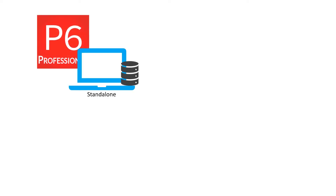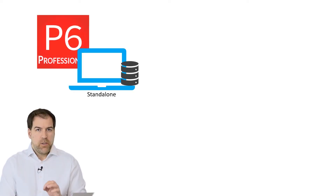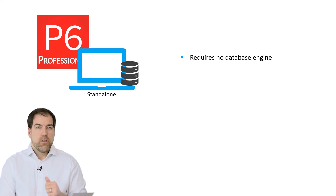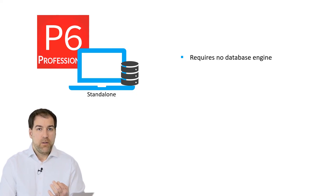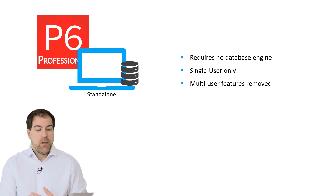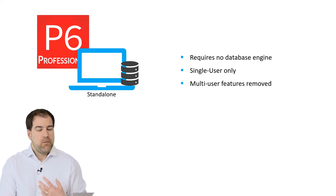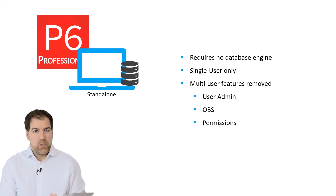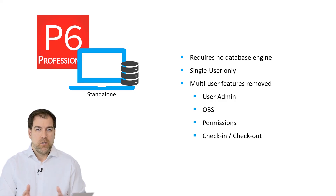Lastly, let's talk about the P6 Pro Standalone version. There are one or two differences when connecting to a Standalone database versus an Enterprise database. Number one, the Standalone requires no database engine — the database is actually just a file using a tool called SQLite, which simplifies things majorly and makes it really fast. Number two, it's single-user only, so you can't have multiple people working in the Standalone environment. A couple of multi-user features have been removed, such as user administration, OBS, permissions, and check-in and check-out of projects.